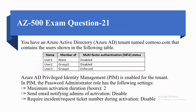Coming to the questions. You have Azure Active Directory named contoso.com that contains users as shown in the following table. User 1 is a member of no group, User 2 is a member of Group 1, and User 3 is a member of Group 1. Regarding their MFA status: User 1 is disabled, User 2 is disabled, and User 3 is enforced.